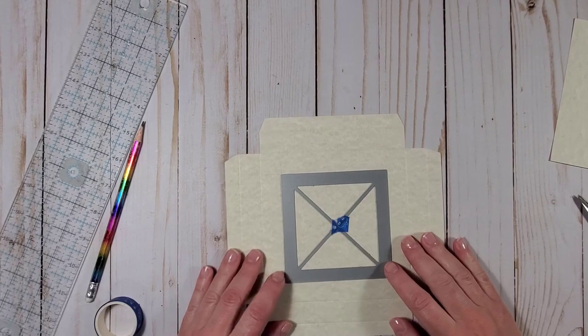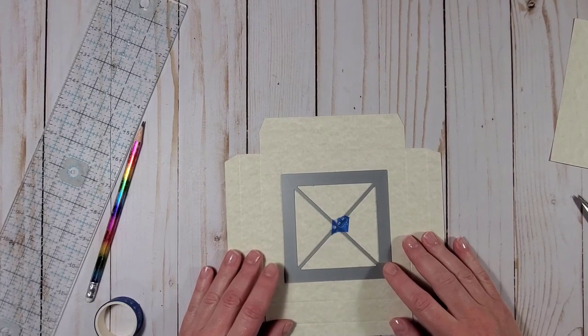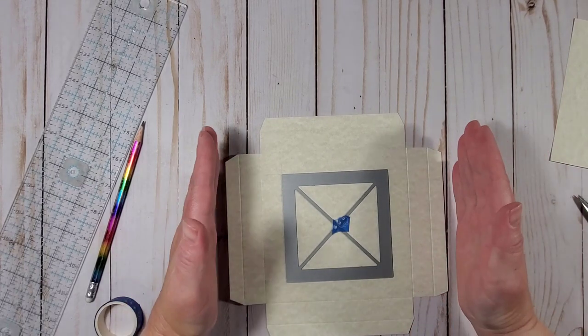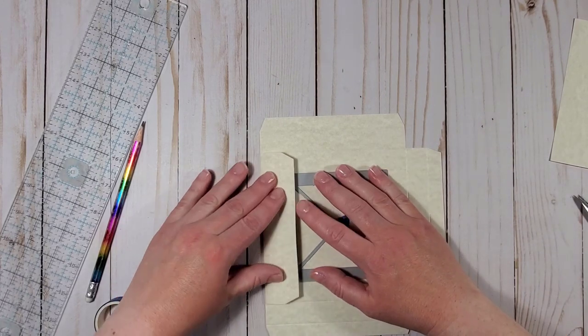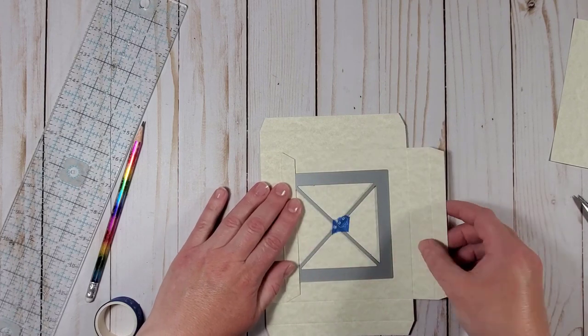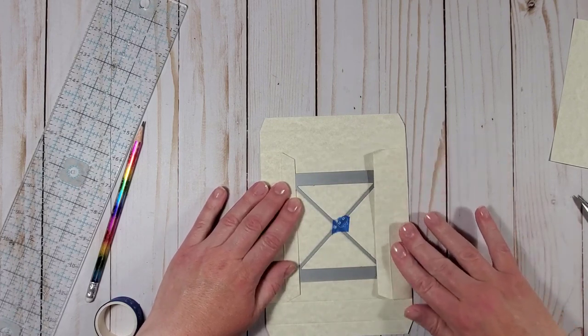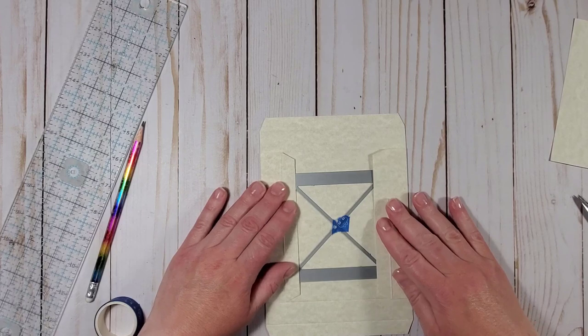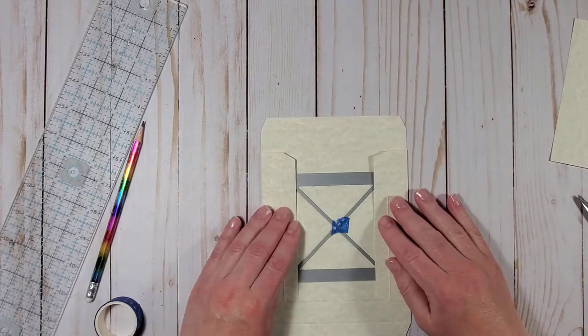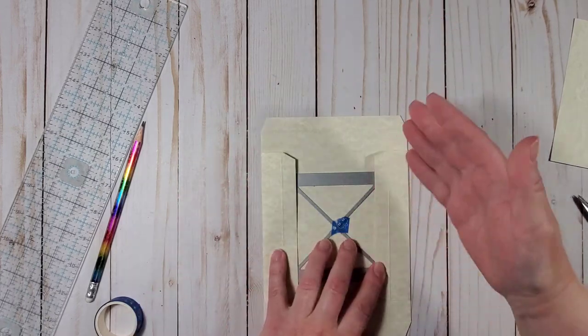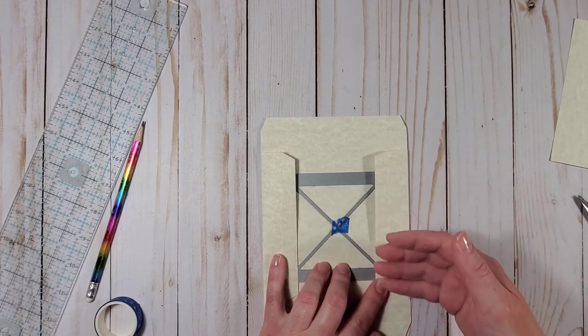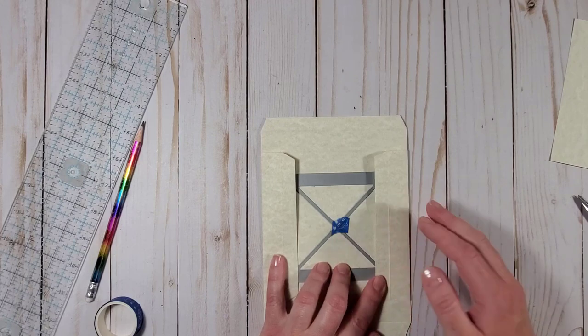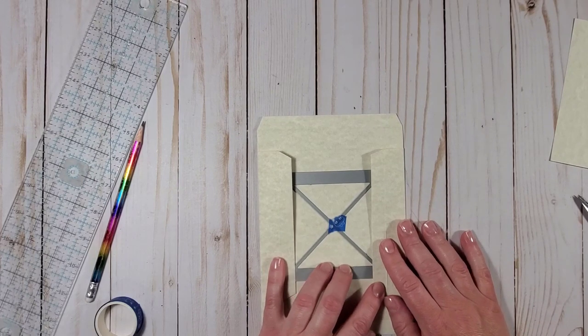By the way if the die cutting machine that you have is not wide enough to accommodate this whole piece, you can fold the side flaps of this construction up like so and then I think it will be just right for most of the die cutting machines out there to feed this cardstock piece through.